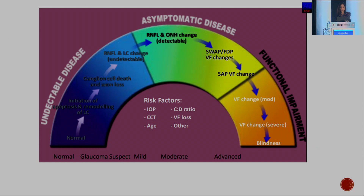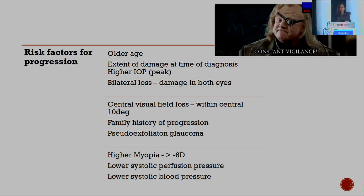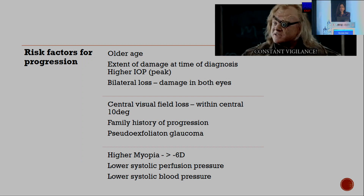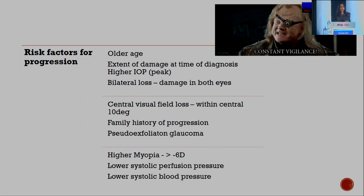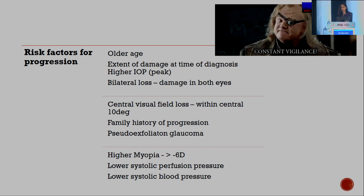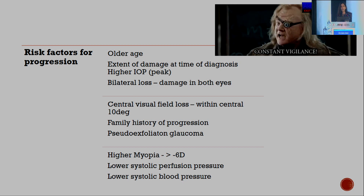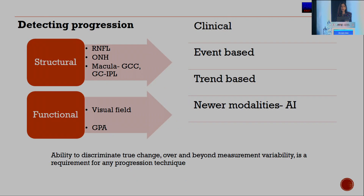We all know glaucoma progresses from an undetectable disease stage to an asymptomatic disease and then goes on to functional impairment, starting from the ganglion cell death, which reflects early on to the RNFL damage and later on to the perimetric damage. We need to have constant vigilance on the risk factors of progression, and patients with risk factors need to be followed up more thoroughly with any investigative technique that you choose.